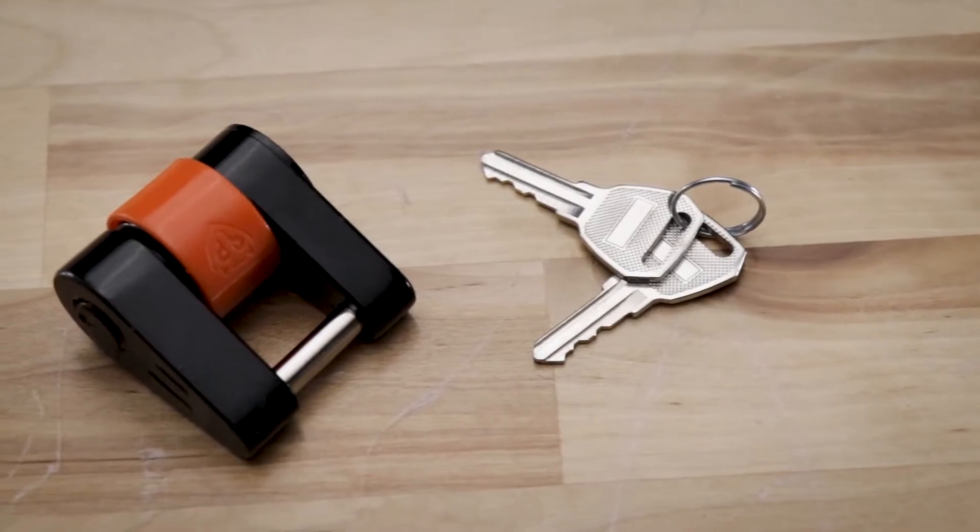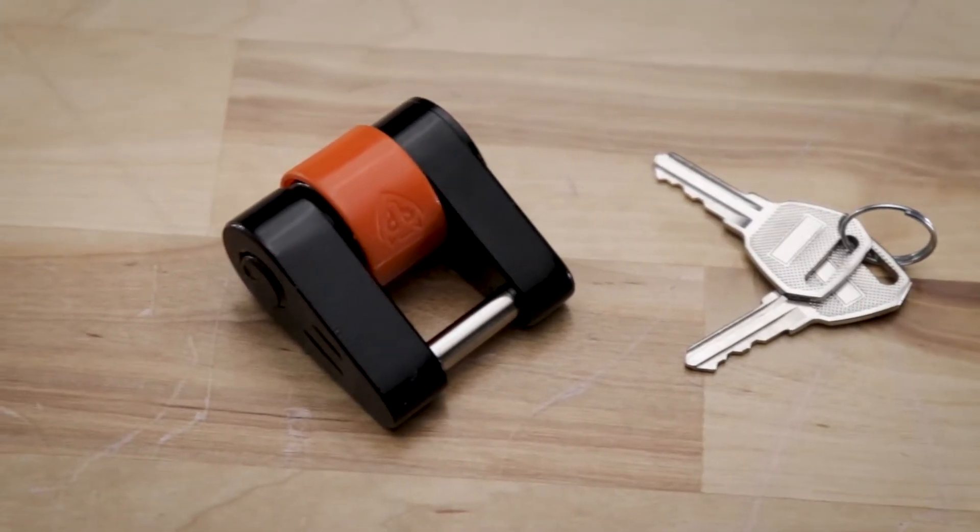You can purchase the anti-theft coupler ball either by itself or with the coupler lock. There's really not an installation here, but it is pretty straightforward to use, so let's take a look.